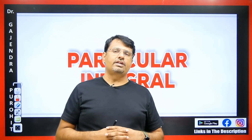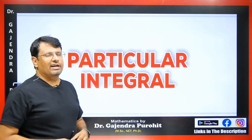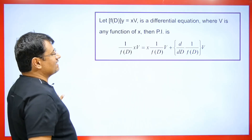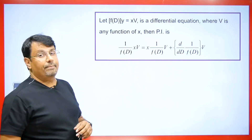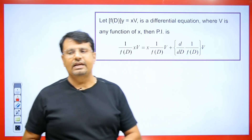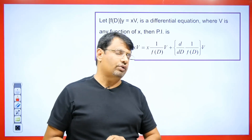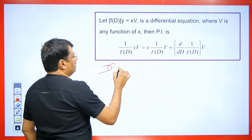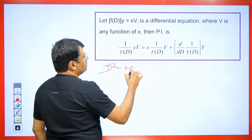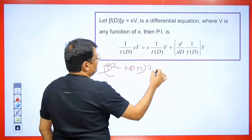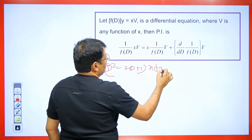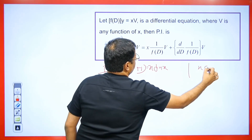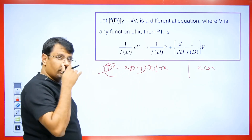Today I will discuss the particular integral and how to find the PI for x·sin(x), x²·sin(x), x·cos(x), and x²·cos(x). I will discuss this with you. Whenever we are given a question like this — for example, (D²−2D+1)·x·sin(x), or x·cos(x) in place of sin(x) — we can solve this type of question very easily.